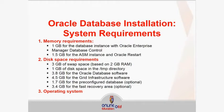For memory requirements: at least 1 gigabyte for the database instance with Oracle Enterprise Manager Database Control, and 1.5 gigabytes for the ASM instance and Oracle Restore. For disk space requirements: at least 3 gigabytes of swap space, 1 gigabyte for the temporary directory, 3.8 gigabytes for the Oracle database software, 4.5 gigabytes for the Grid Infrastructure software, 1.7 gigabytes for the pre-configured database, and 3.4 gigabytes for the fast recovery area — the last two are optional. The operating system must also be compatible.